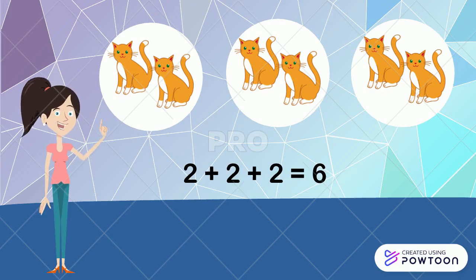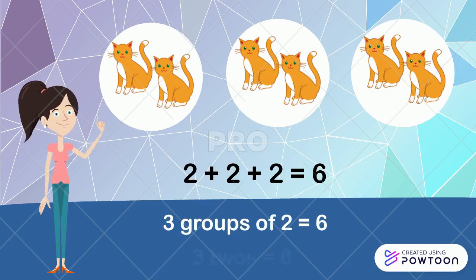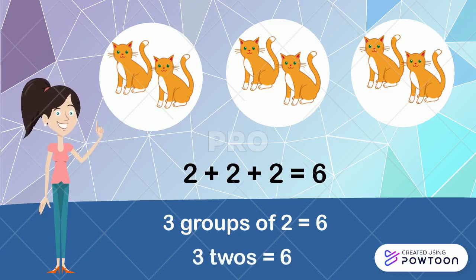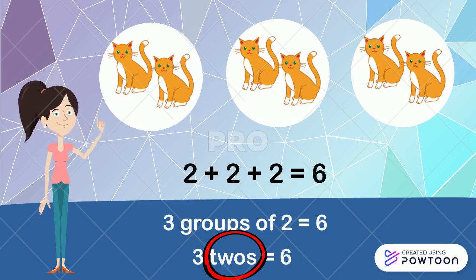Because we have the same numbers here, we can just write as three groups of two is equal to six. Or, three twos is equal to six. Look at the word 'two' here — we add s, so it becomes 'twos.' The same like three becomes 'threes,' four becomes 'fours,' and so on.